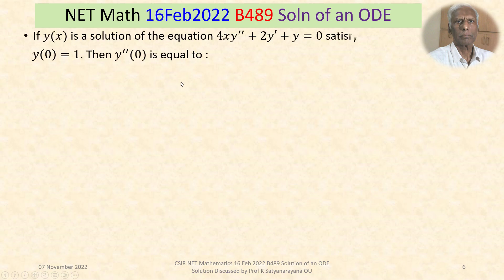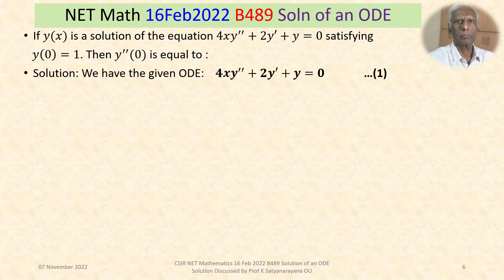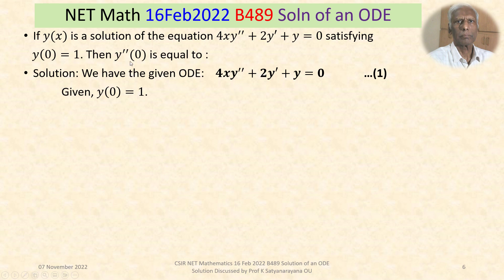That is our given problem. We now discuss the solution in detail. We have the ODE 4x·(d²y/dx²) + 2·(dy/dx) + y = 0, with initial condition y(0) = 1, meaning y takes the value 1 when x = 0. This differential equation together with the initial condition forms an initial value problem. From this we have to find the value of y''(0).